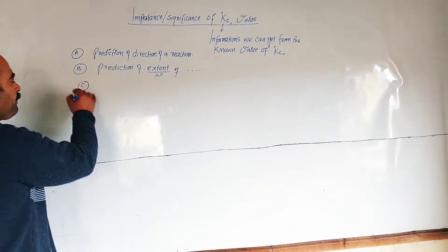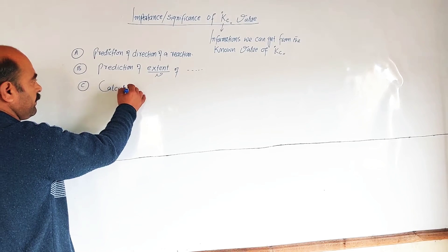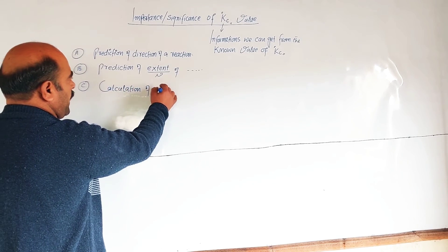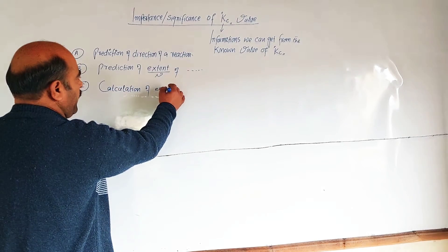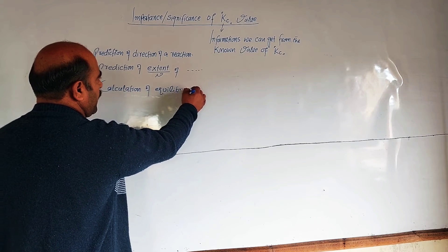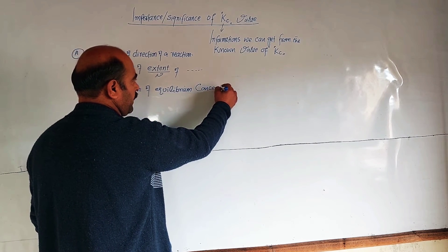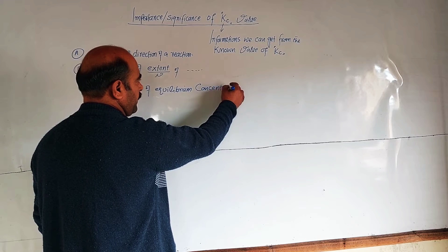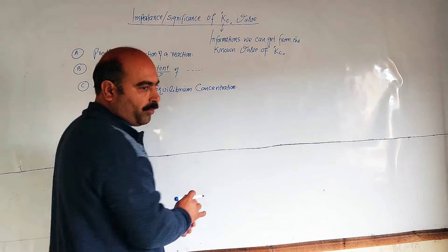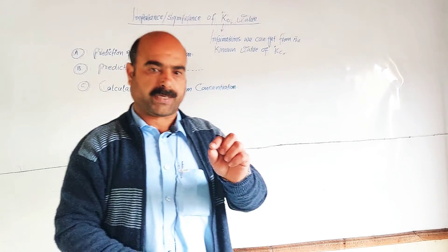Prediction of extent of a chemical reaction: This tells us how far the reaction proceeds — whether the forward reaction is complete or the reverse reaction is complete. We can also use Kc for the calculation of equilibrium concentrations.